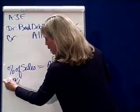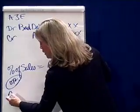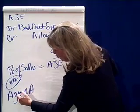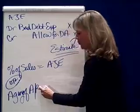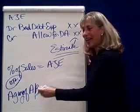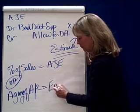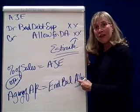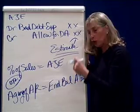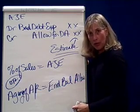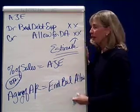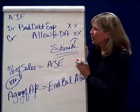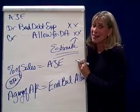The second method is called aging of accounts receivable. With aging of accounts receivable, the aging gives you the ending balance in the allowance. So you always have to find the difference between the current balance in the allowance and the desired ending balance — and that difference is the amount of this entry. So two different methods to get that adjusting entry: how do I recognize the estimate of bad debts?